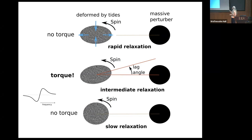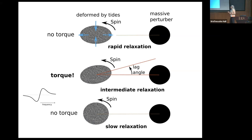Here's a cartoon of what's happening. Here's our perturber, here's the body we're resolving. The tidal force is quadrupolar — it's pulling it out. If the body is relaxing really quickly, so it instantly reforms, it's perfectly aligned and there's no torque. If it's really slow at relaxing, it stays round and there's no torque. It's this intermediate setting — where the body has time to respond — that gives you what's known as the lag angle, and that allows a torque between this body and that body.